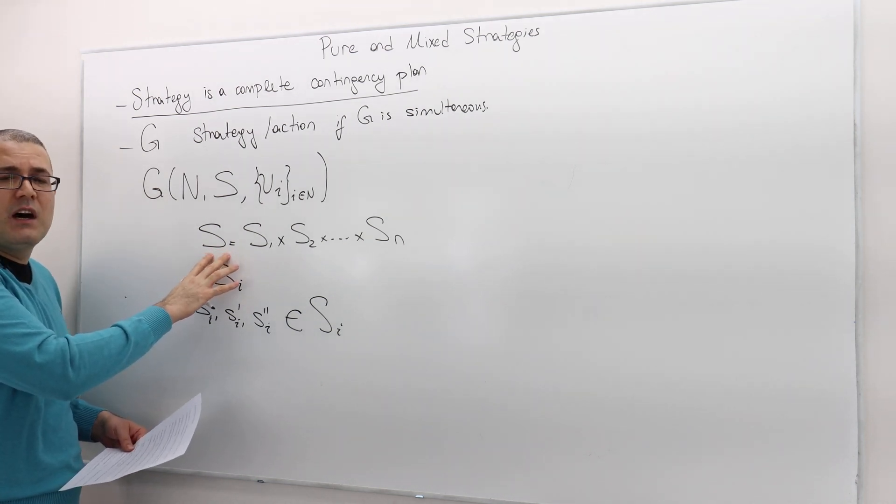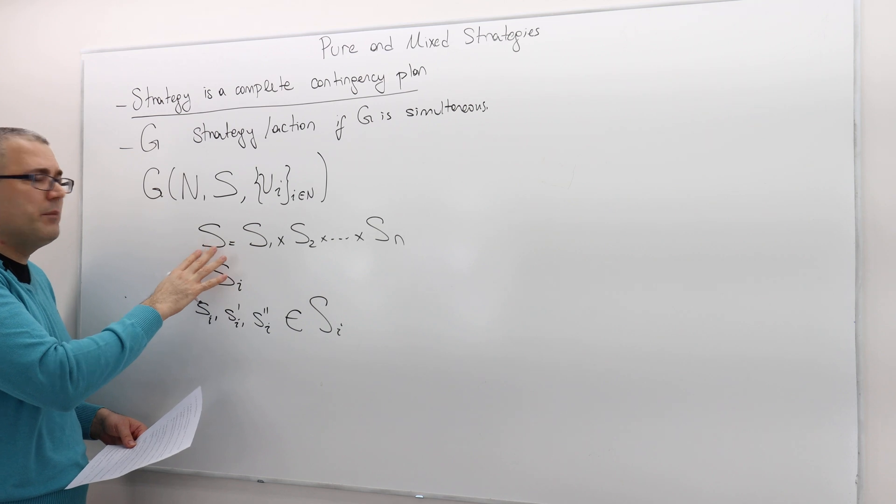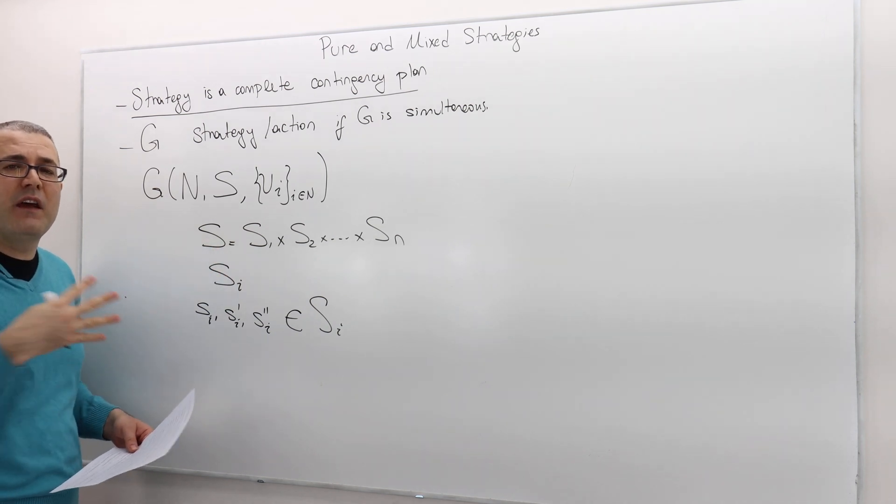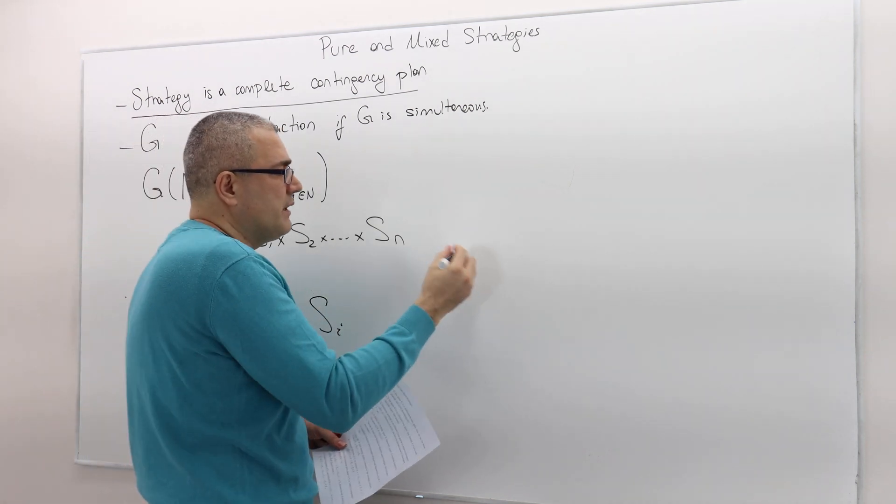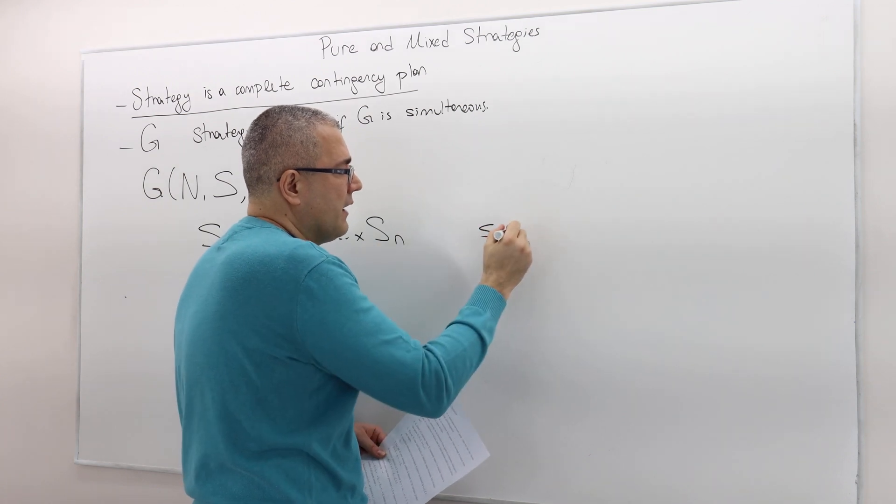A standard element in S. So here in this set S, there is no subscript I or one or two because it basically tells us that this is a vector. So a standard element in S is denoted by S, for example.